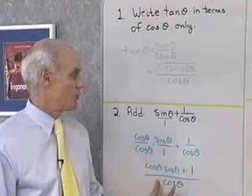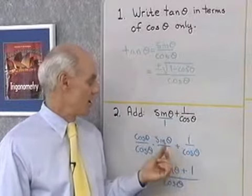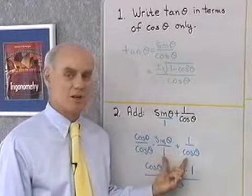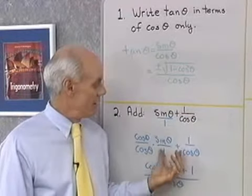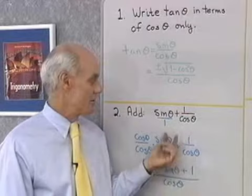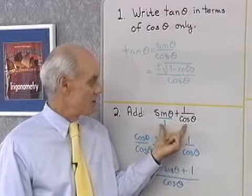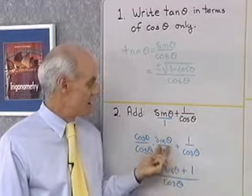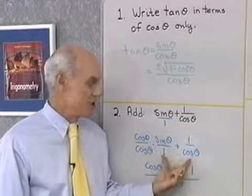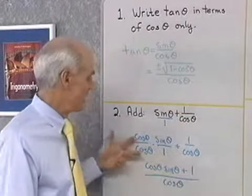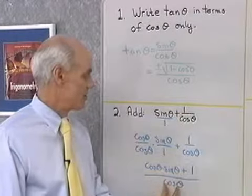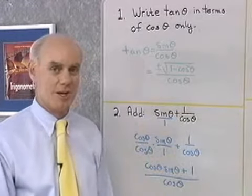This is just practice working with identities and doing arithmetic with expressions involving sine theta and cosine theta. I add the two expressions just like adding fractions: sine theta over 1 plus 1 over cosine theta, find the least common denominator of cosine theta, change to equivalent fractions, add the numerators, and put the result over that least common denominator.